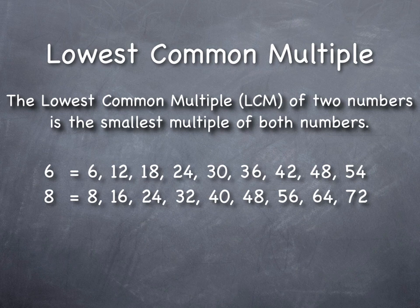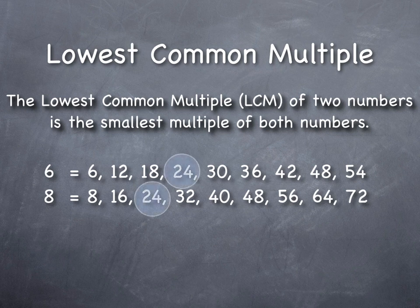So we can see, for instance, both of the numbers, six and eight, have forty-eight as a multiple. But that's not necessarily the lowest number. The lowest number that is a multiple of both is twenty-four.